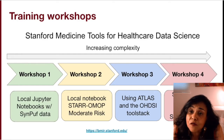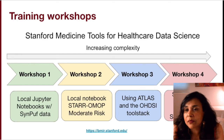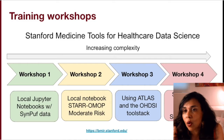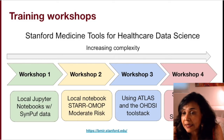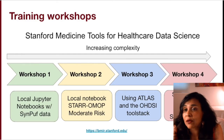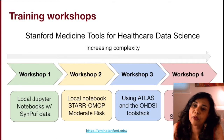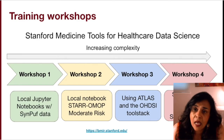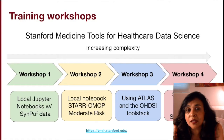By the end of tutorial three, you should be able to explore the structured data in the Stanford STAR OMOP, be able to create concept sets and cohorts, and run analyses in network studies using the patient-level prediction and population-level estimation packages. You can do this using the execution engine.